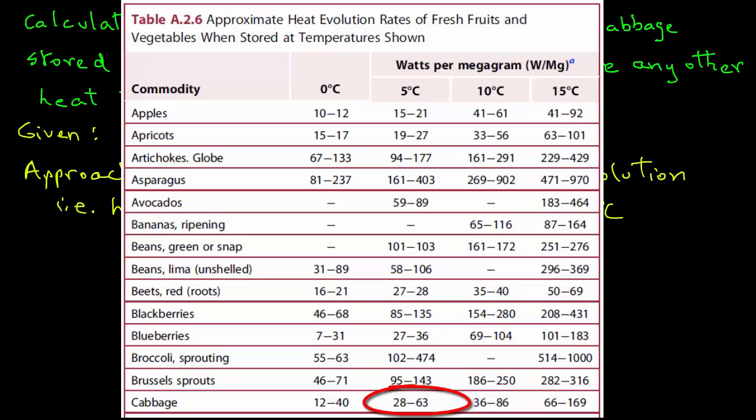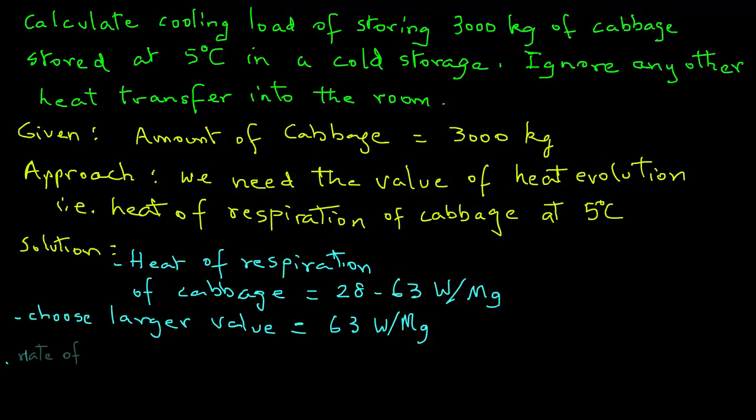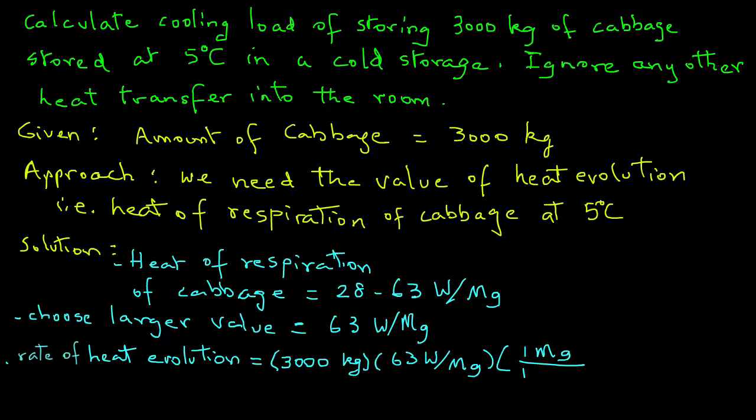Next, we can go ahead and calculate that the rate of heat evolution, or the heat of respiration, equals 3000 kilograms times 63 watts per megagram. Of course, we can convert megagram to kilograms because one megagram has 1000 kilograms. These units will cancel out and we will be left with 189 watts.